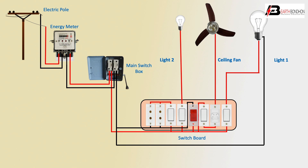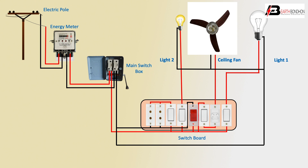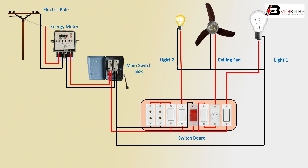Light and ceiling fan negative conditions: first switch on — light on; first switch off — light off. Second, regulator switch on — ceiling fan on. Regulator switch controls ceiling fan on.